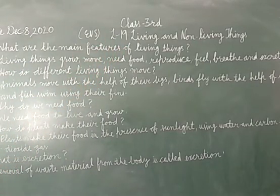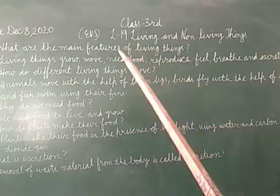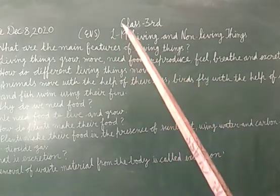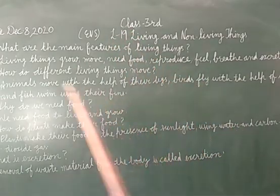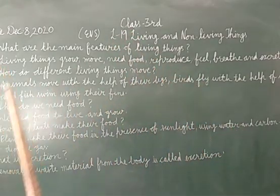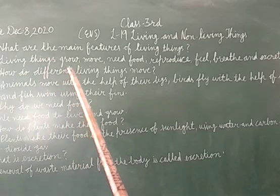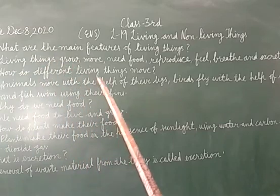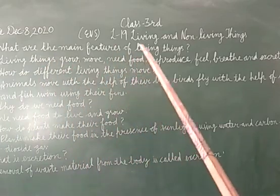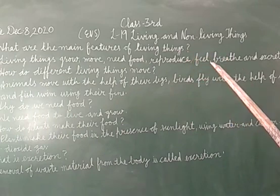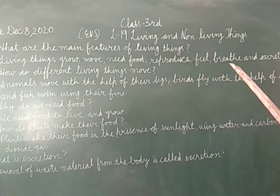Living things ki main features — what are the main features of living things? Answer is: living things grow, move, need food, reproduce, feel, breathe and excrete.